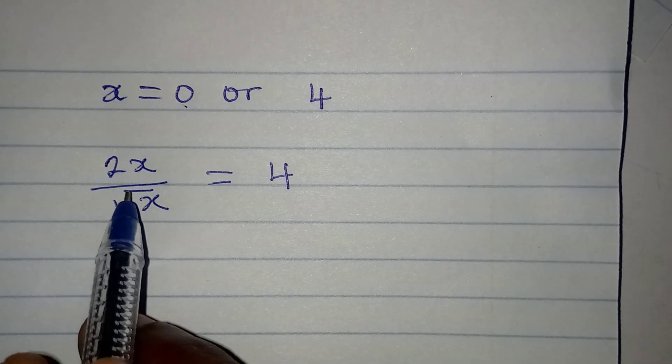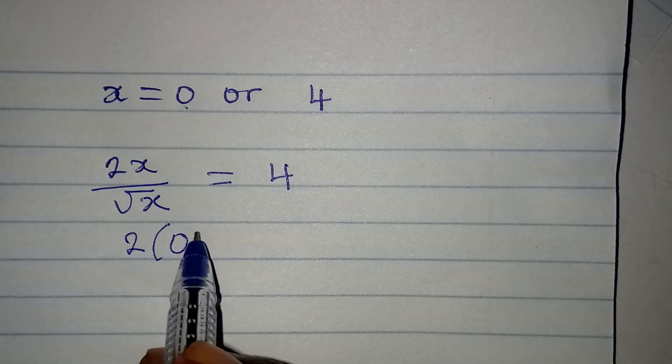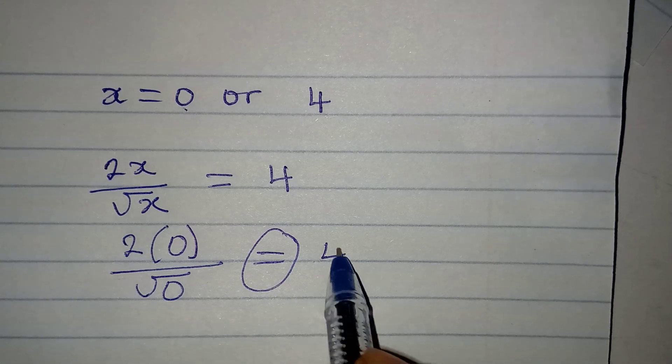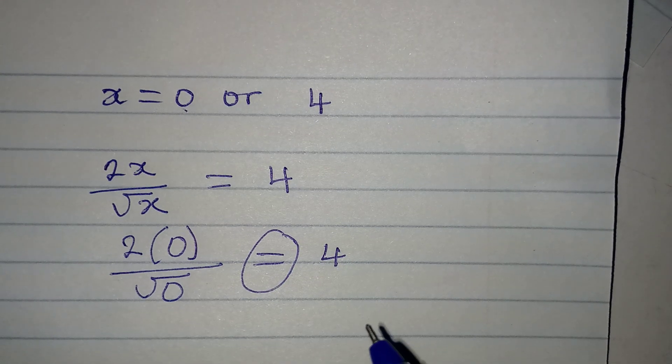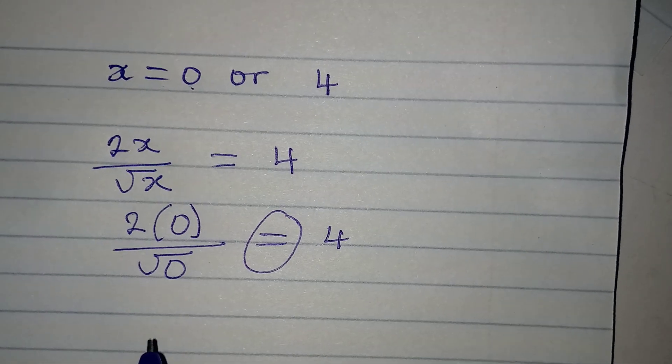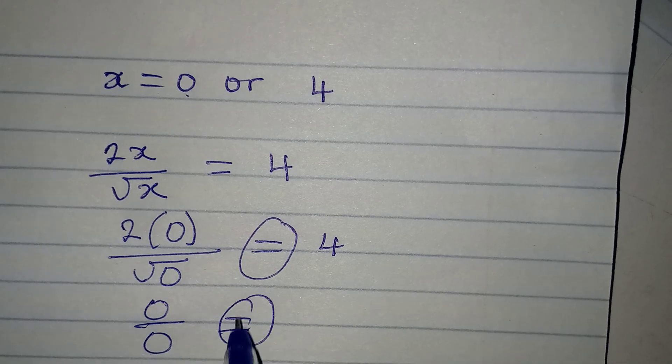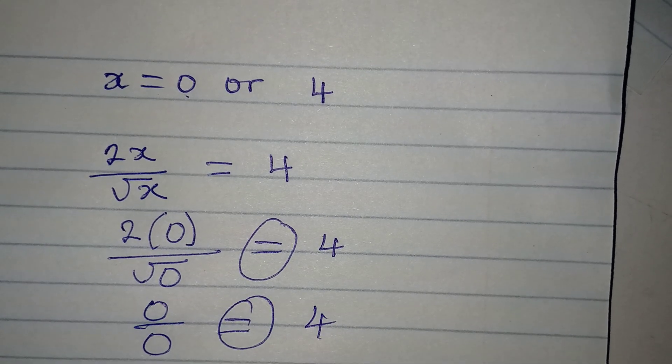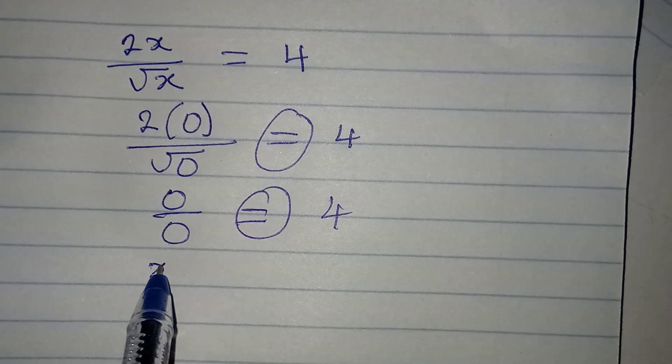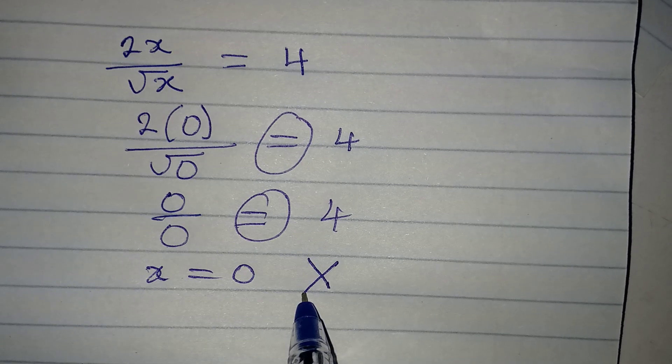Now, if you substitute 0 into this, you're going to have 2 multiplied by 0 over square root of 0. Will this be equal to 4? Never will it be equal to 4. Because, at the end of the day, you're having 0 over 0, right? And, this cannot be equal to 4. And, as a matter of fact, this is an indication that x equals 0 does not satisfy the equation.